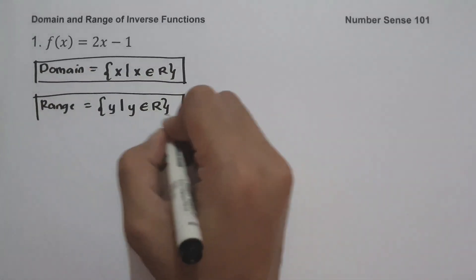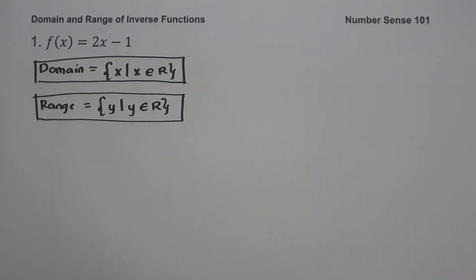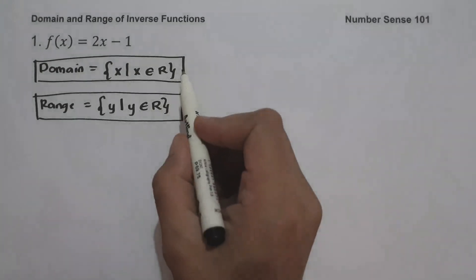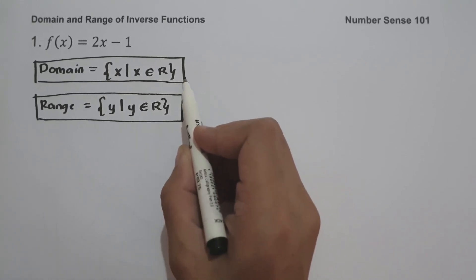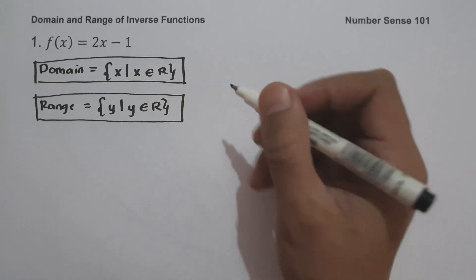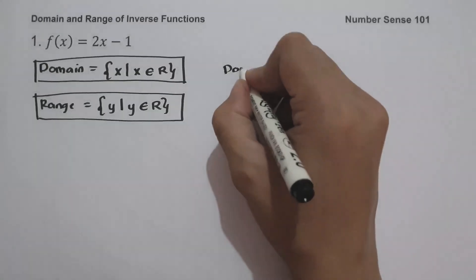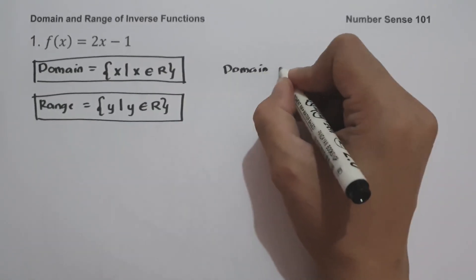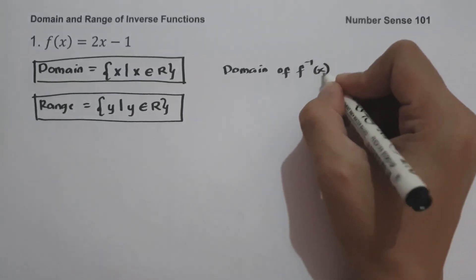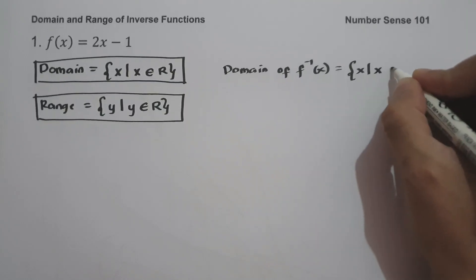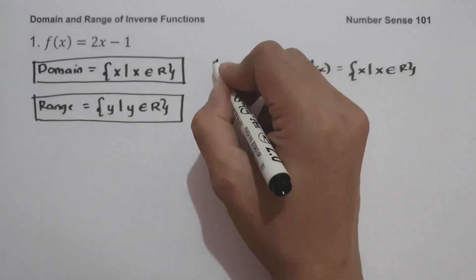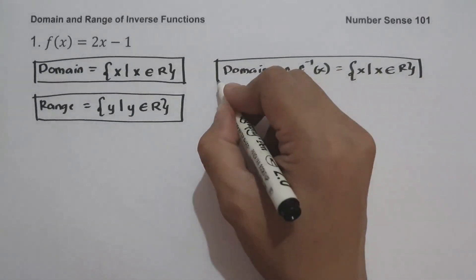To find the domain and range of the inverse function, always remember: the domain of the original function is the range of the inverse function, and the range of the original function is the domain of the inverse function. So the domain of the inverse function is the set of x values such that x is all real numbers.